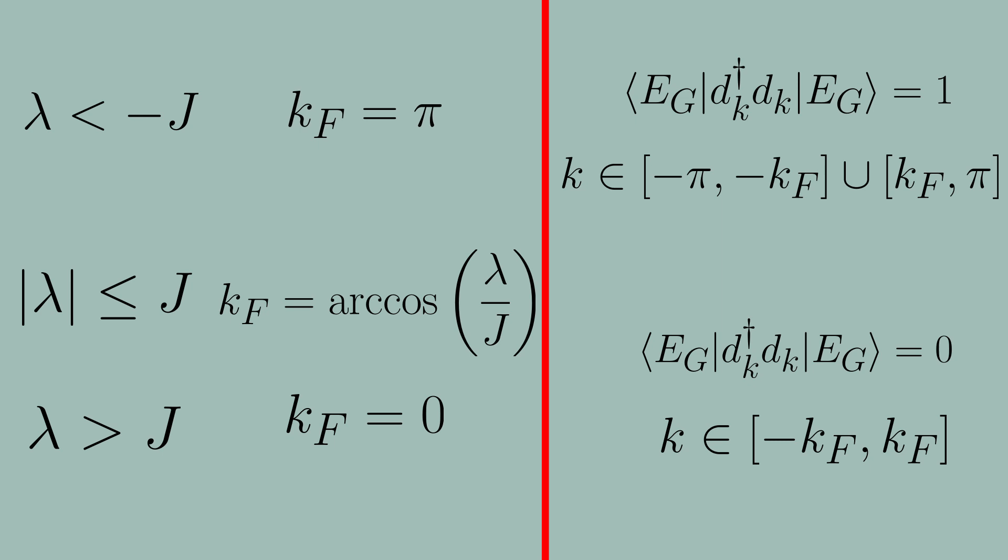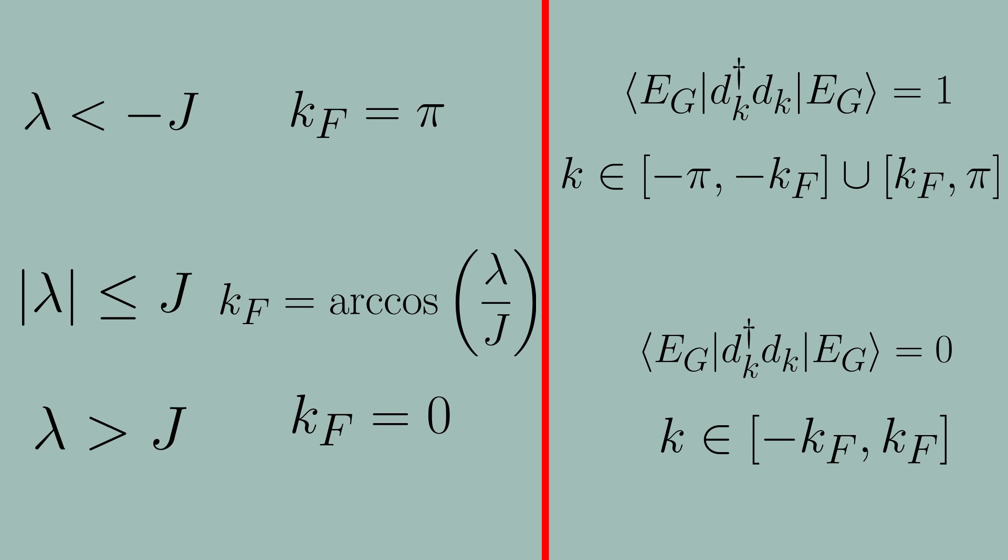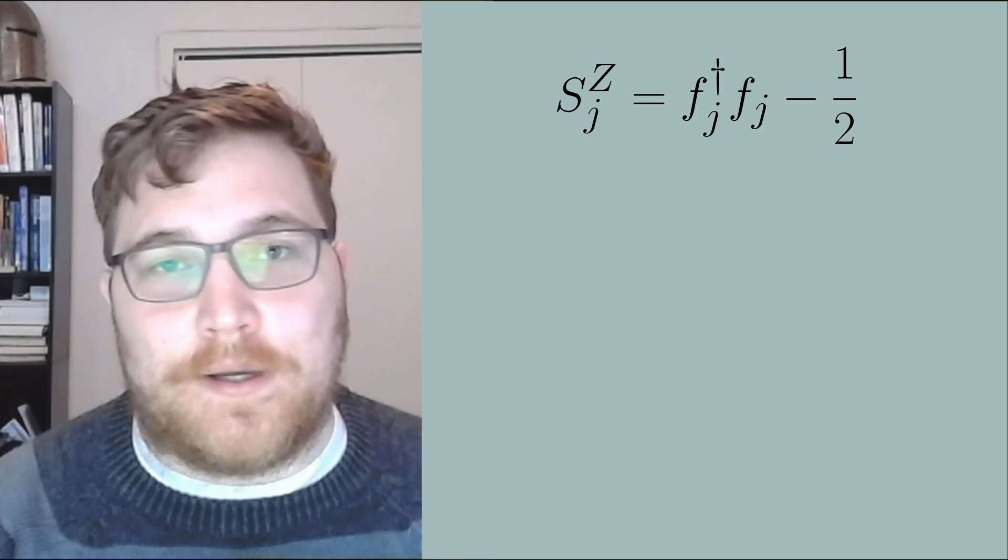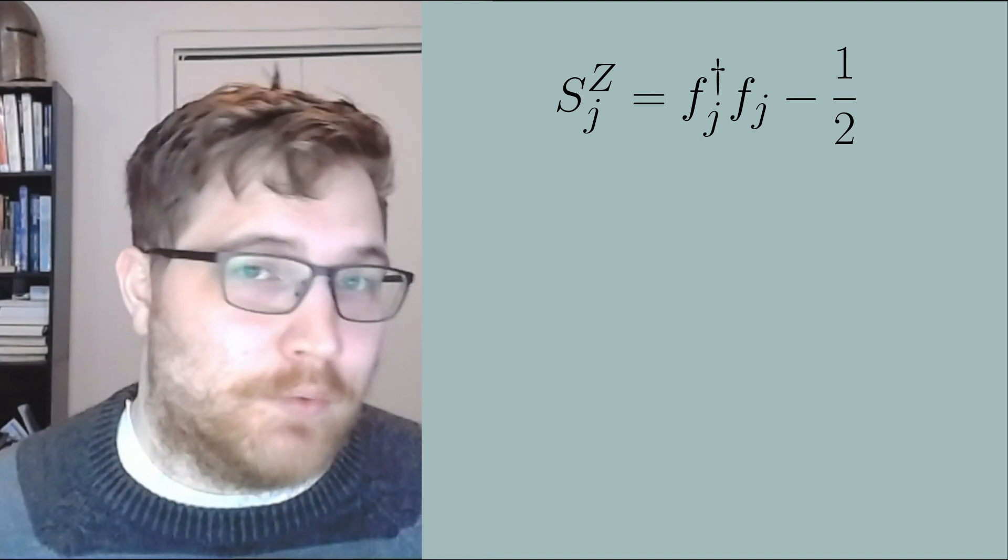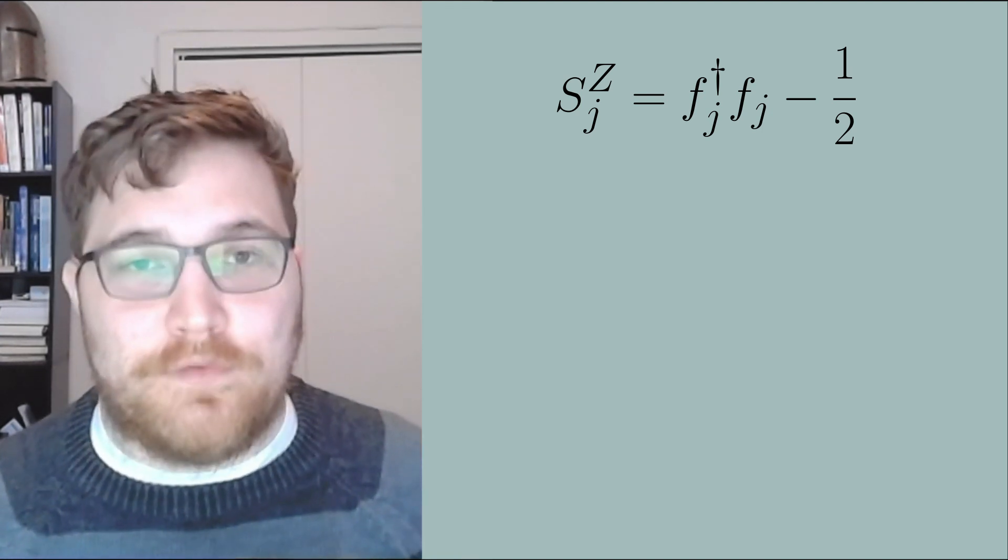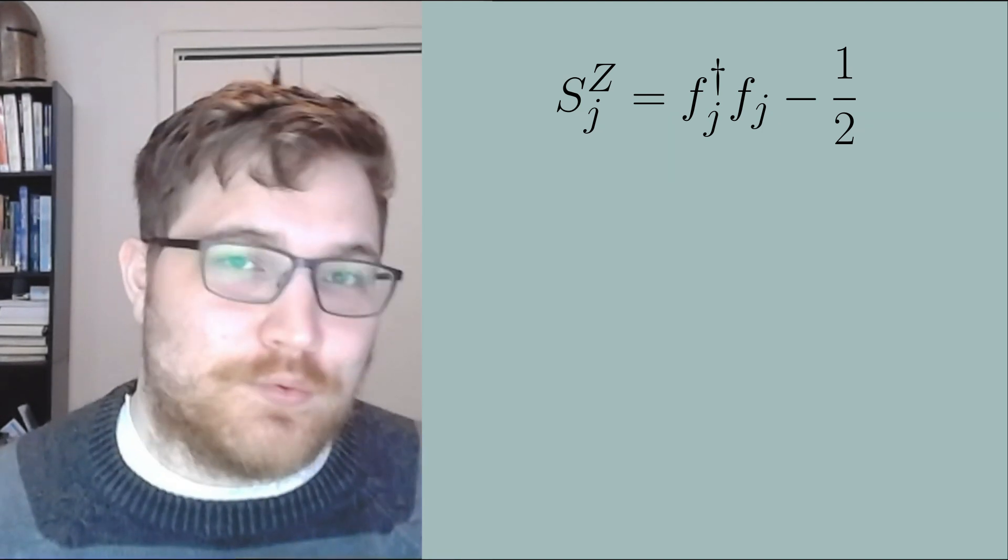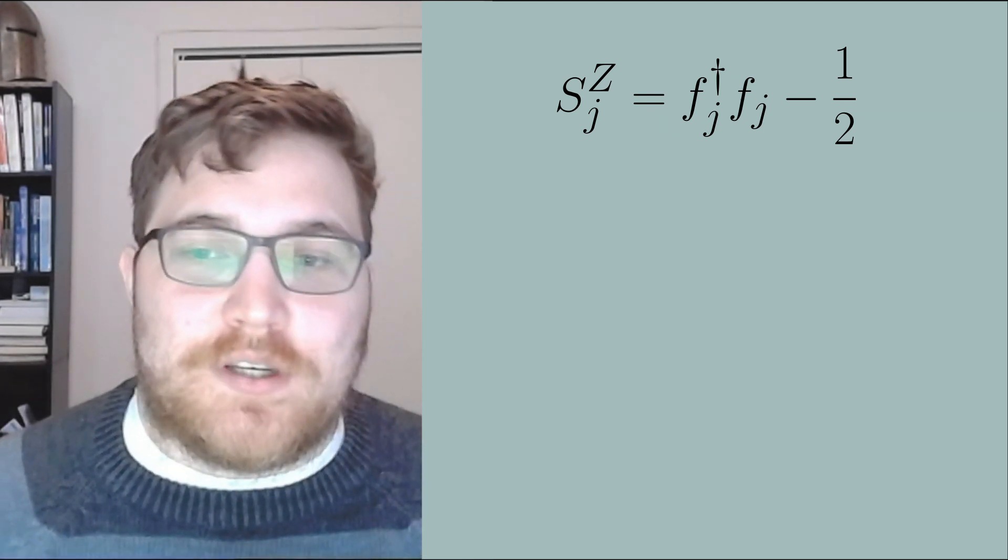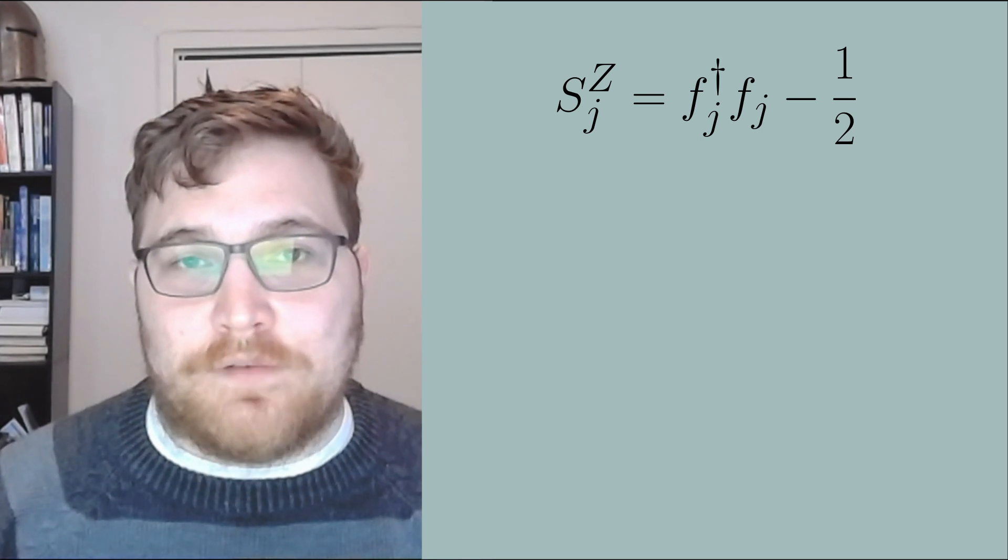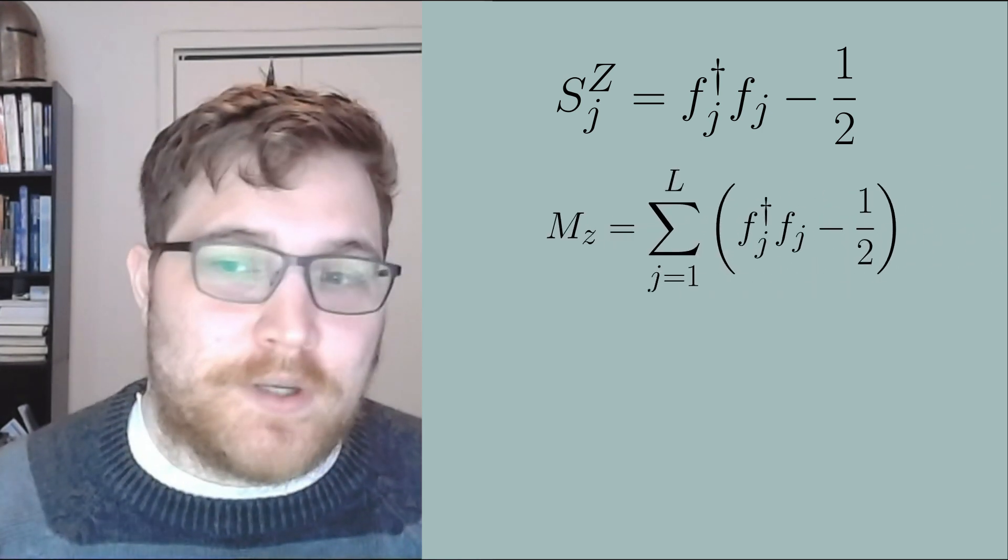Now that we know how to construct our ground state, let's track the magnetization with these properties in mind. Recall that we are mapping the spin one half z operator to fermionic number operators in the following way. This was due to the Jordan Wigner transformation that we introduced two videos ago. The total magnetization in the z direction can then be written in terms of the local fermionic operators with the following expression.